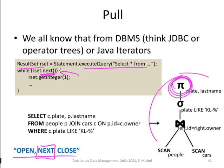If the projection wants a tuple to process or output, it must be requested from the selection operator, which gets its tuples from the join operator. This is the pull way — you pull at the topmost operator and all tuples flow from the bottom up.